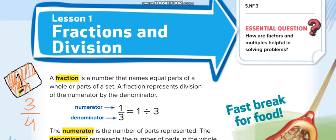The denominator shows us the total number of parts, and the numerator shows us how many parts you have — or how many are shaded or unshaded depending on the question. The number up in the fraction is the numerator, and the number down is the denominator. You can also write a fraction the division way: one third is equal to 1 divided by 3, meaning you are dividing 1 into 3 equal parts.